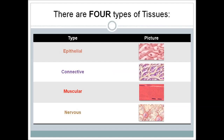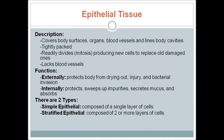In anatomy, there are four different types of tissues: epithelial, connective, muscular, and nervous. Our first type of tissue is epithelial tissue. It covers body surfaces, organs, and blood vessels, and lines body cavities. It is also tightly packed.